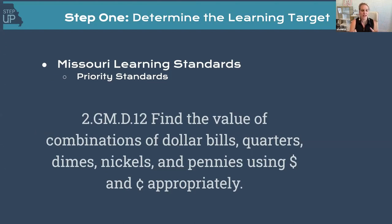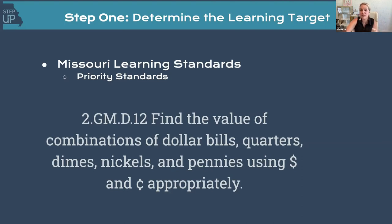The Missouri Learning Priority Standard for second grade is: find the value of combinations of dollar bills, quarters, dimes, nickels, and pennies; use the dollar and cent sign. This is a hard skill for second graders for many reasons. If you're a K–2 teacher, you're already thinking about bringing in dollar bills. My mind certainly goes to misconceptions and the fact that kids don't see money anymore — everyone sees credit cards. So this is a really important but difficult skill to teach, and definitely worthy of teacher and student clarity work.